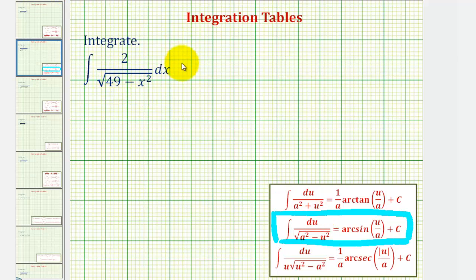So let's rewrite this by first factoring out the two. We'll write this as two times the integral of one divided by the square root. And then for 49, let's write 49 as seven squared minus x squared.